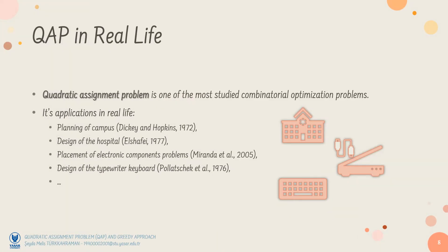As one of the most studied combinatorial optimization problems, the quadratic assignment problem has various applications in real life, including the planning of campus, the design of the hospital, the placement of electronic components problems, and many more. That's why it is a problem attracting the researchers to study on it.